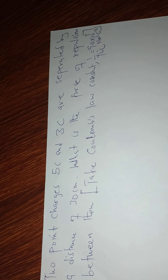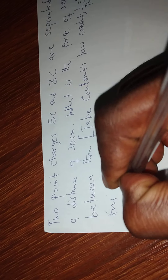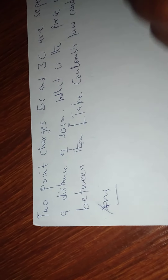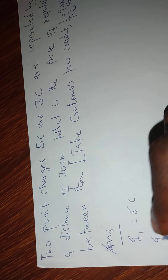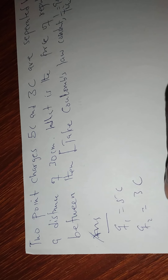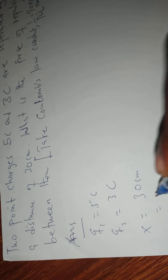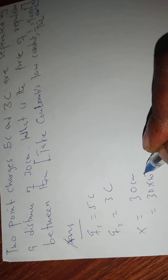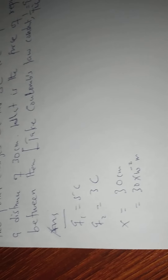We're talking about a repulsive force because the charges on them are of the same sign, and therefore they will not attract but rather repel. So in our solution, we have charge Q1 equal to 5 coulombs, and Q2 equal to 3 coulombs. The separation is 30 centimeters, which is the same as 30 times 10 to the power negative 2 meters. This is our separation.